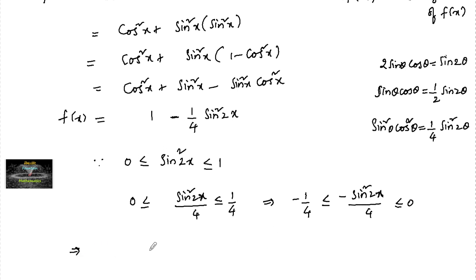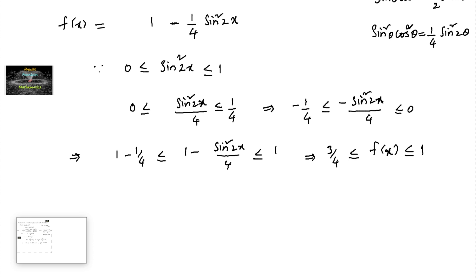Adding 1 to the inequality, 1 - 1/4 ≤ 1 - sin²2x/4 ≤ 1. So 3/4 ≤ f(x) ≤ 1, and hence we can say f(x) lies between 3/4 and 1.